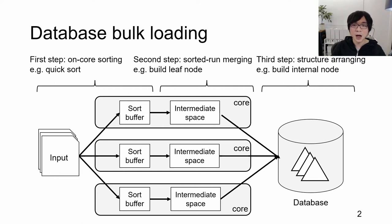This in-core sorting in a sort buffer typically uses a quicksort algorithm with DRAM. As an intermediate store, cheaper secondary stores like flash memory and magnetic disks are used.